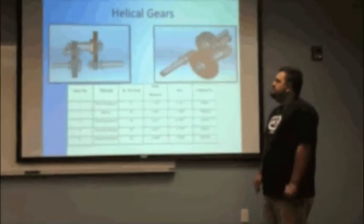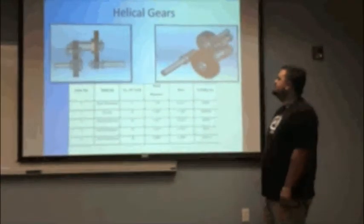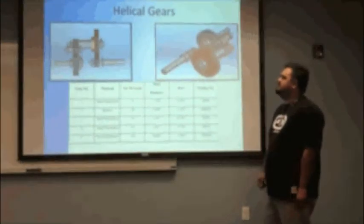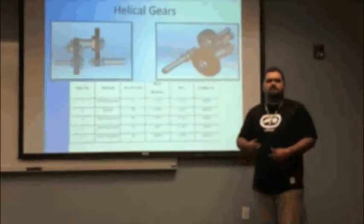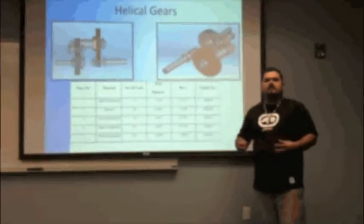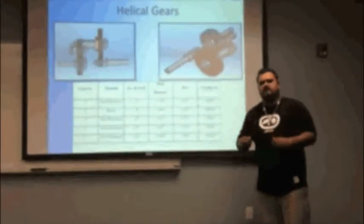So we ended up with a five-gear set with four shafts. We have an input shaft, an output shaft, an intermediate shaft, and an idler shaft. We needed the idler gear to reverse the direction of the output shaft from the input shaft and maintain the alignment of the shaft.